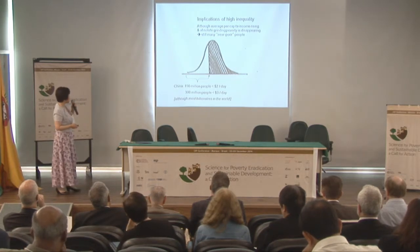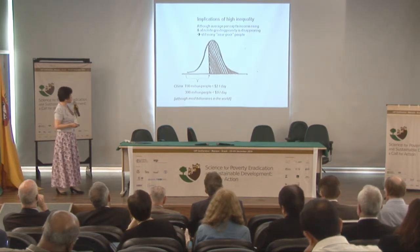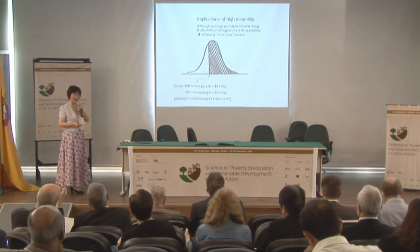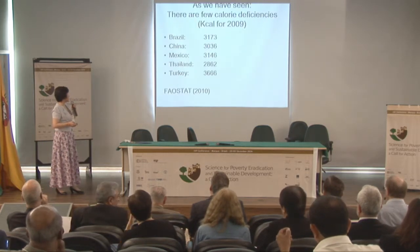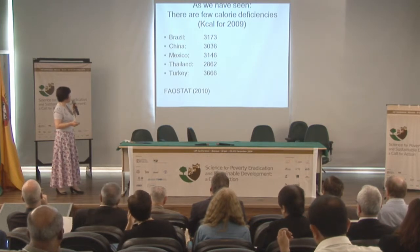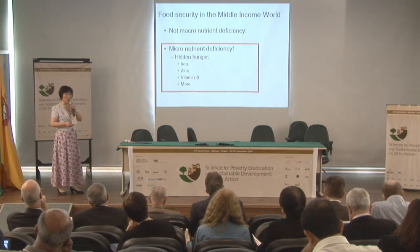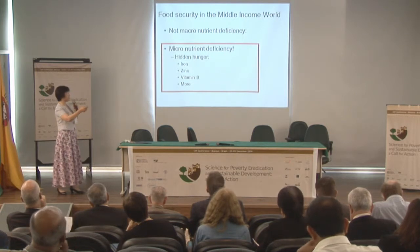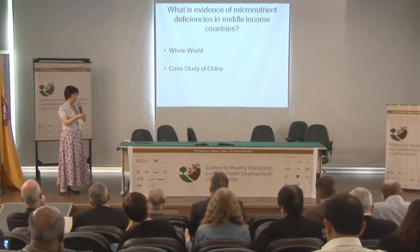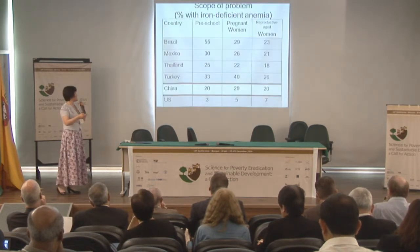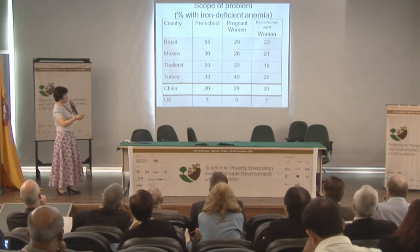Food insecurity at this stage is not macronutrient deficiency but micronutrient deficiency—what we call hidden hunger—including iron, zinc, and vitamin B deficiencies. Looking at global statistics on iron-deficient anemia: China has 20% of preschool children, 29% of pregnant women, and 20% of reproductive-aged women affected. Thailand shows 25%, and Brazil has 55% of preschool kids affected. China is clearly among the micronutrient-deficient countries.